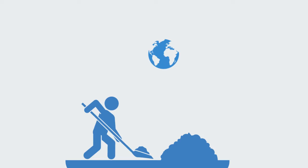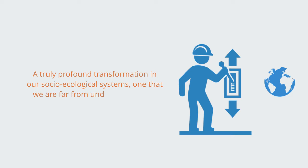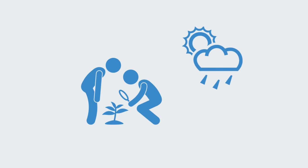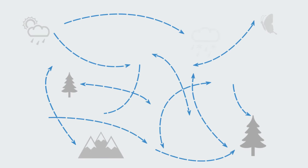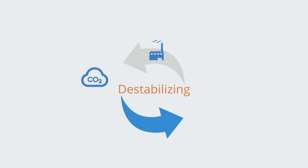We have switched from making ad hoc interventions into ecosystems to becoming the primary drivers of change within the biophysical processes of the entire planet — a truly profound transformation in our socio-ecological systems, one that we are far from understanding the consequences of. Nowhere are these consequences being made more acutely explicit than through changes in climate. Through human industrial interventions, the feedback mechanisms that stabilize and regulate Earth's systems have become significantly degraded, increasing destabilizing positive feedback that makes the system more unstable and generating more extreme events — what scientists call global weirding.